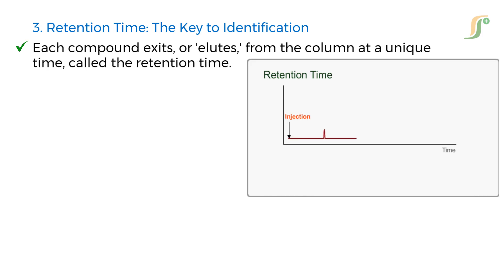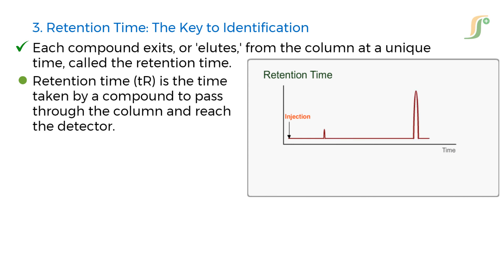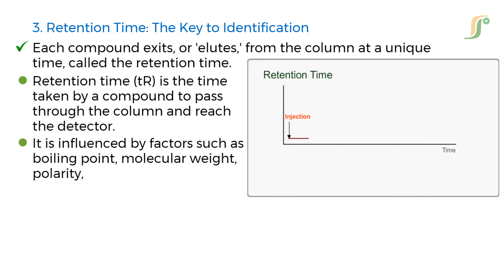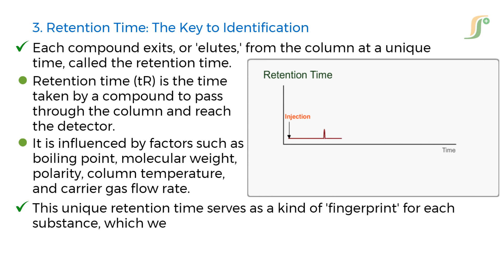Third step is retention time, which is the key to identification. Each compound exits or elutes from the column at a unique time, called the retention time. Retention time is the time taken by a compound to pass through the column and reach the detector. It is influenced by factors such as boiling point, molecular weight, polarity, column temperature, and carrier gas flow rate. This unique retention time serves as a kind of fingerprint for each substance, which we can compare to standard references.